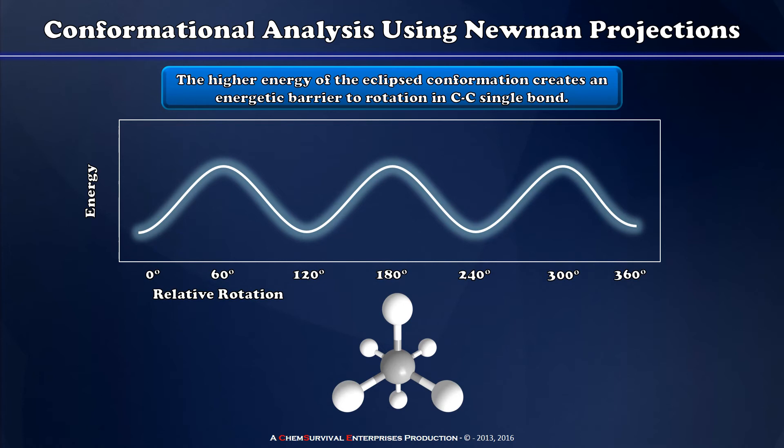Staggered conformations are the lowest energy conformers possible because those substituents have as much space as possible available, so there's no steric clashing. But what if I rotate this carbon-carbon bond by 60 degrees?